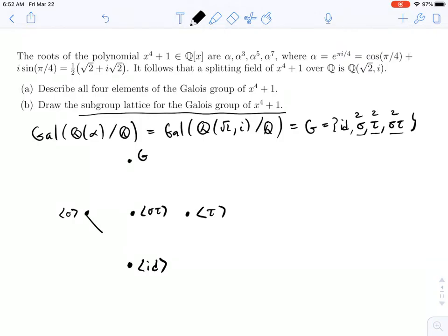Alright, so we can connect those dots. And remember, when we draw these diagrams, we're just showing subset containment. So this subgroup down here is contained in each one of these three, and then each one of those three is contained in G.